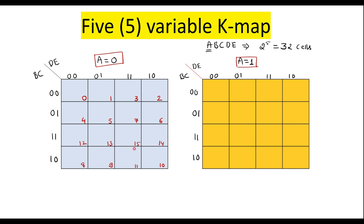After 15, we start the next cell numbers in the second Kmap beginning from 16. So the second Kmap has cells 16, 17, 18, 19, 20, 21, 22, 23, 24, 25, 26, 27, 28, 29, 30, and 31. So here we can observe that 2 to the power 5 is 32 — we have cells 0 to 31, total 32 cells. By using 2 Kmaps, we can accommodate all 32 cells.